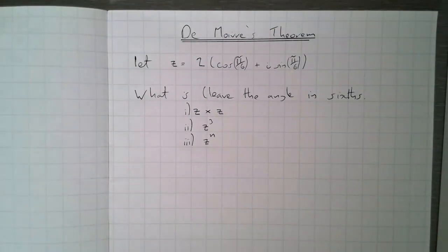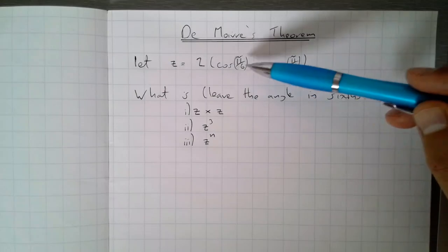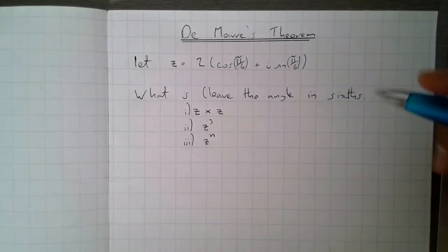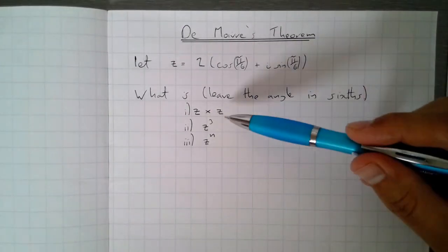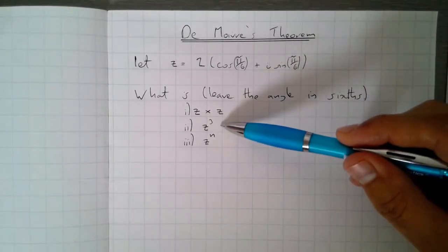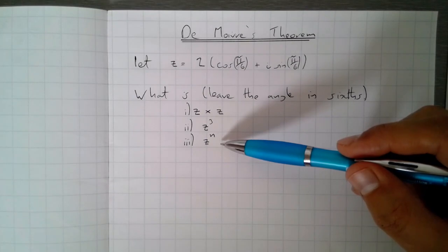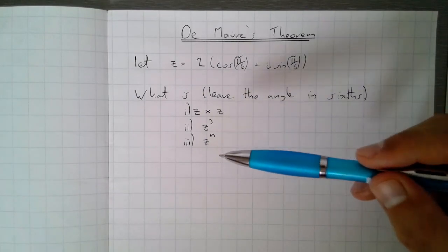So what I'd like you guys to do first off today is look at this complex number here: z equals 2 lots of cos π over 6 plus i sine π over 6. And what I'd like you guys to do is work out what z times z is, what z cubed is, and can you try and think about what z to the n would be. So pause the video and then come back to me when you've tried those three.